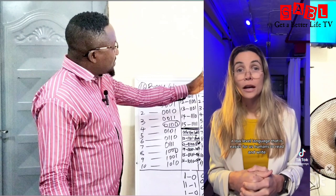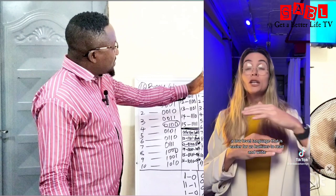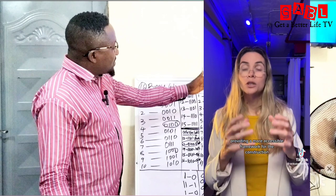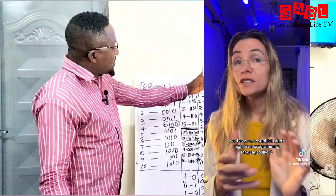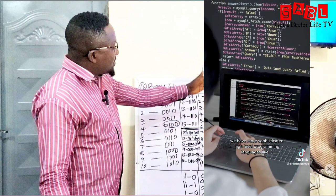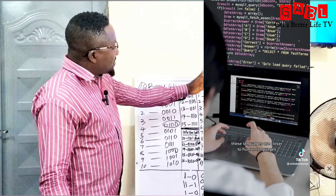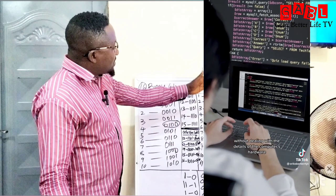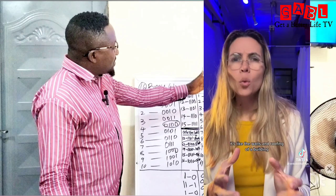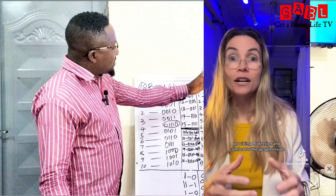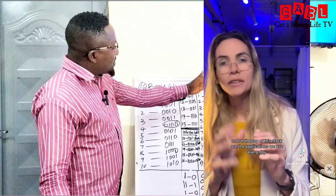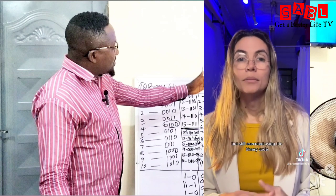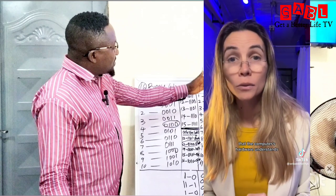How does this all come together to make apps and programs work? It's all about layers. At the very bottom is binary code — the language the computer's hardware understands. Above that is assembly language, a low-level language easier for humans to read. Above assembly we have high-level programming languages like C++, Java, and Python, which are closer to human language. At the top are the applications we use every day, created using high-level languages but still executed using binary code.